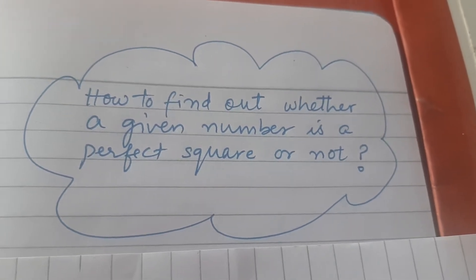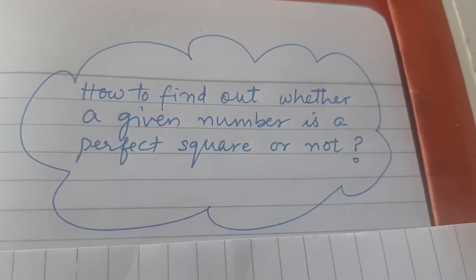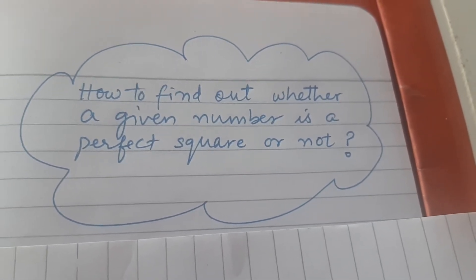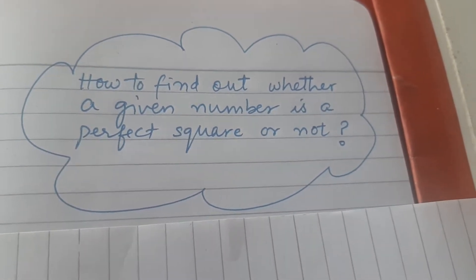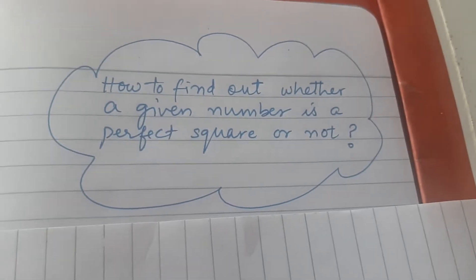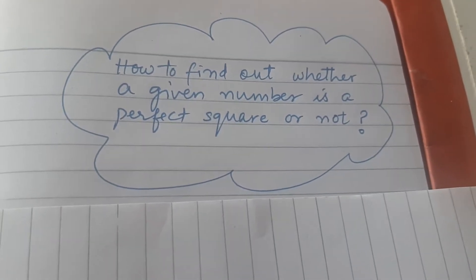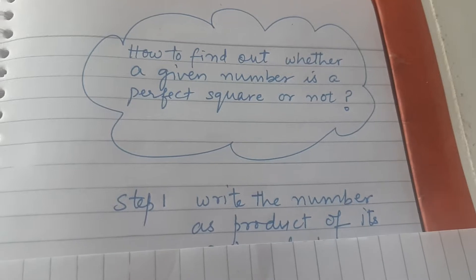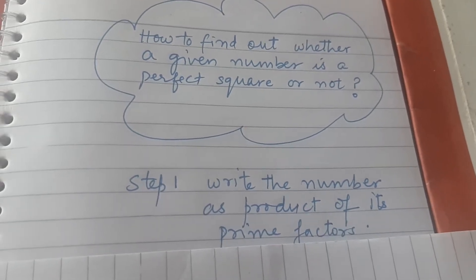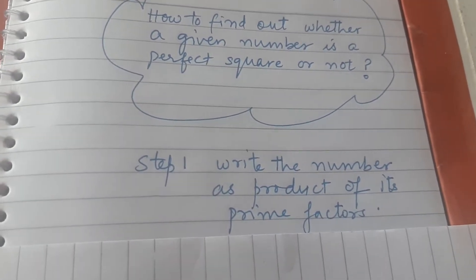Dear students, let us learn how to find out whether a given number is a perfect square or not. We will be using the method of prime factorization. Step one is to write the given number as a product of prime factors.